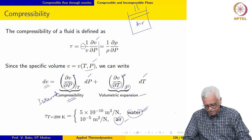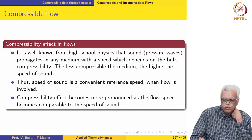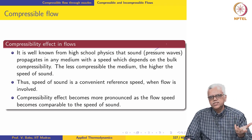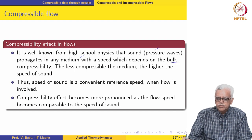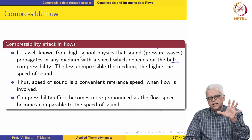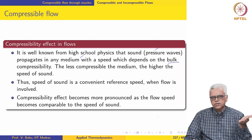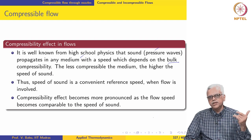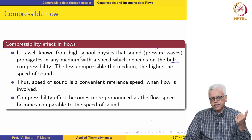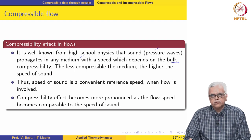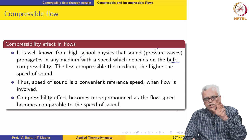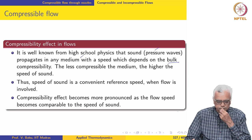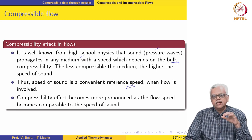Sound is nothing but propagation of pressure waves in any medium, and it travels with a speed that depends on the bulk compressibility. The less compressible the medium, the higher the speed of sound. For example, the speed of sound in air at room temperature is about 330 meters per second, while in water it is of the order of 1 to 1.2 kilometers per second — about 4 times higher than in air. So speed of sound is a convenient reference speed when flow is involved.